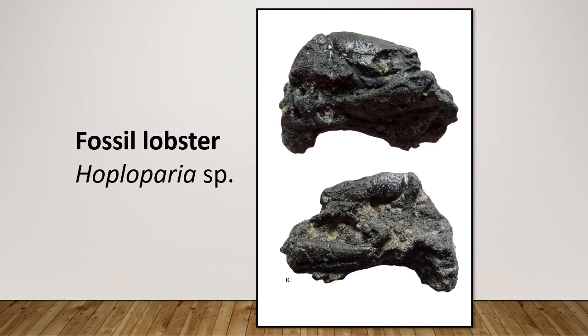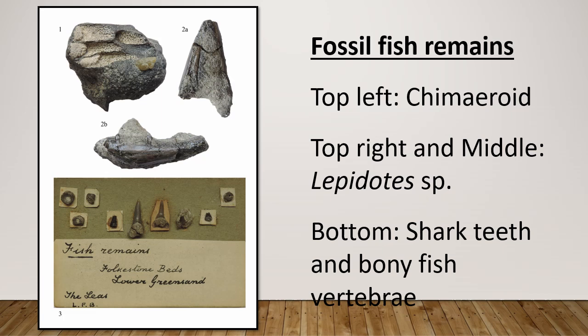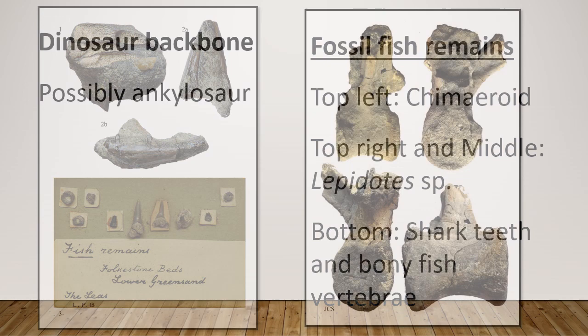We also occasionally get rare specimens of crustaceans — we hope to find some crabs one day, but so far we've only found bits of lobster. Here are some fossil fish remains: little vertebrae, possibly fish teeth, shark teeth, and jaw bones from a ray-finned fish probably known as Lepidotes. We've also got part of a jaw of a chimaeriod, which was a cartilaginous fish.